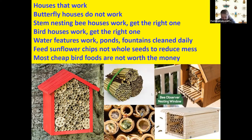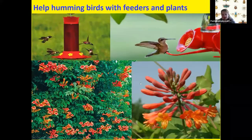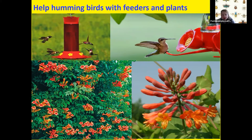A lot of bees don't survive if you don't change those stems. Remember, butterfly houses don't work at all — bird houses do work, and stem-nesting bee houses do work. You can put it in any shape structure, but make sure you can change the stems. I love to encourage people to plant Campsis radicans — native trumpet vine — for hummingbirds.